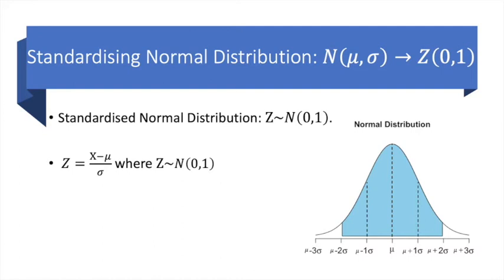So consider this normal distribution on your screens with a mean mu. When we subtract the mean, mu disappears. Hence the new mean value is now zero.